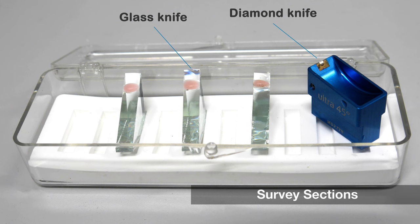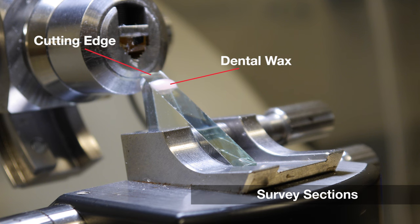First a square is cut, then scored and fractured diagonally into two triangular glass knives. A dab of dental wax is placed just below the knife edge, to hold a drop of water.